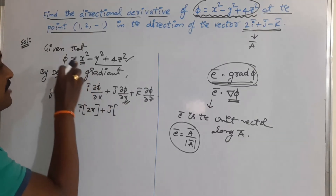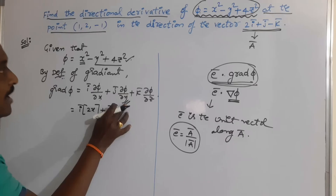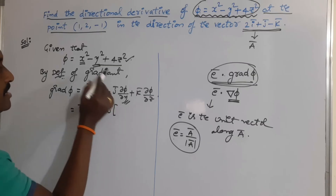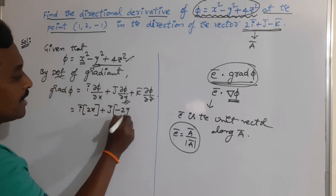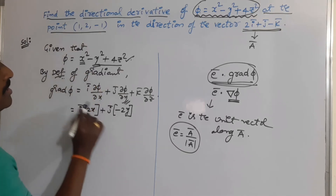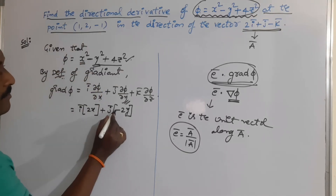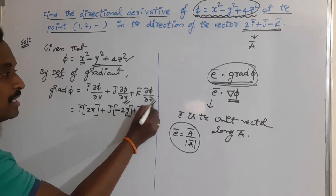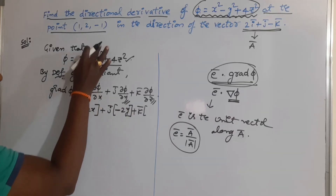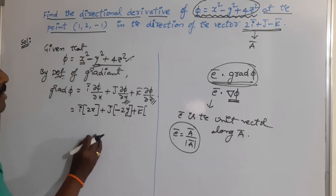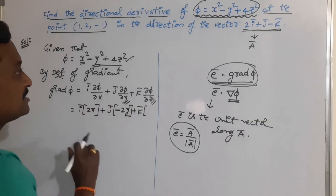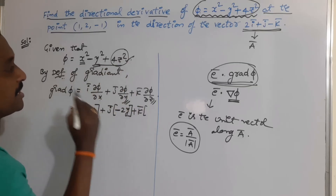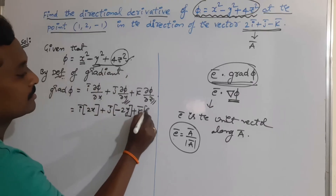Remaining terms are constants because they don't contain x. For j · (∂φ/∂y), we take the partial derivative with respect to y — only y is the variable, so the result is −2y. For k · (∂φ/∂z), only z is the variable; x and y become constants, so the partial derivative of 4z² with respect to z is 4·2z = 8z.